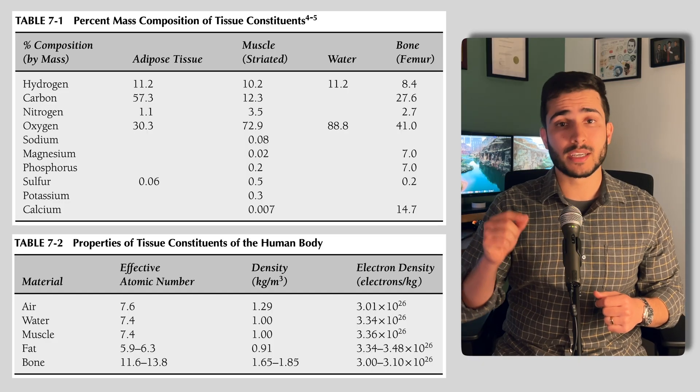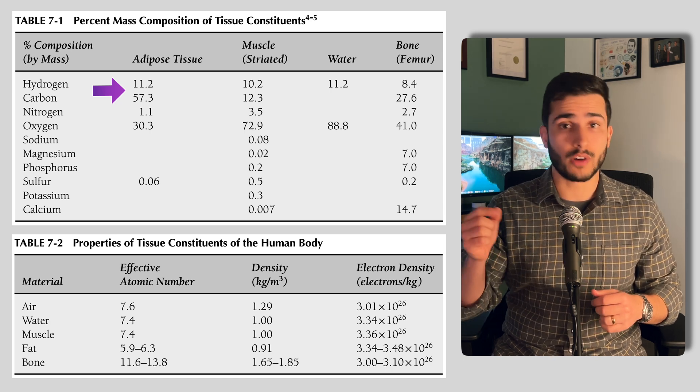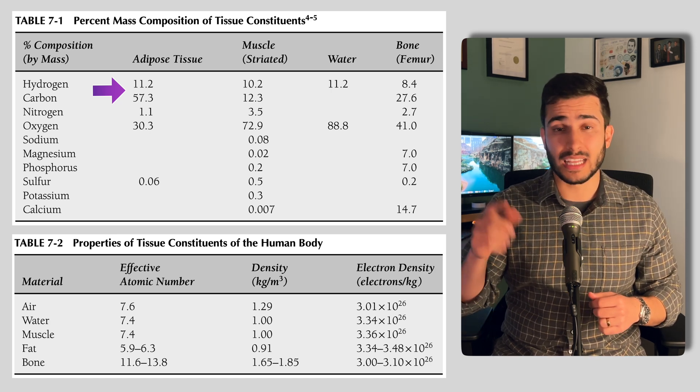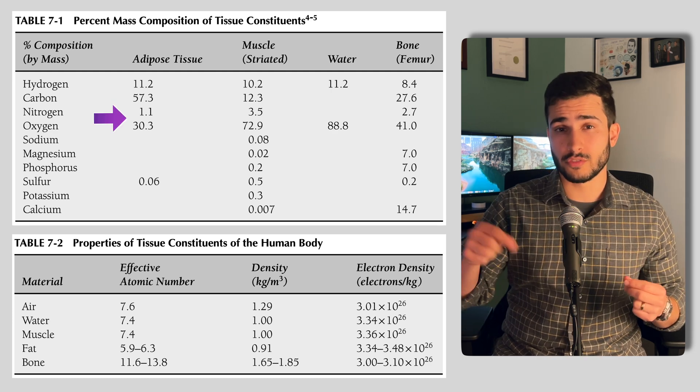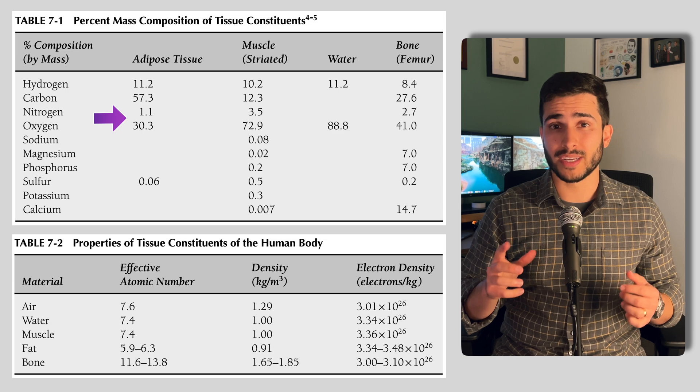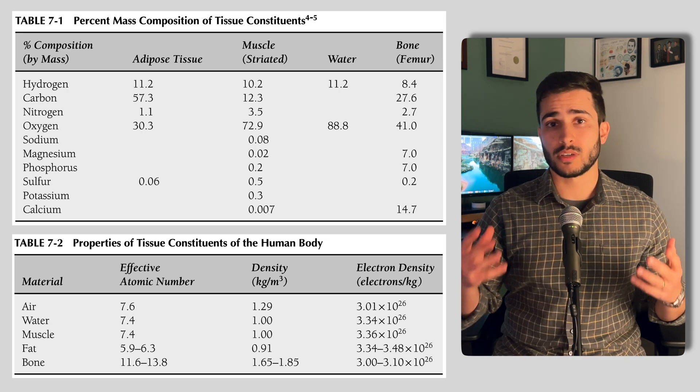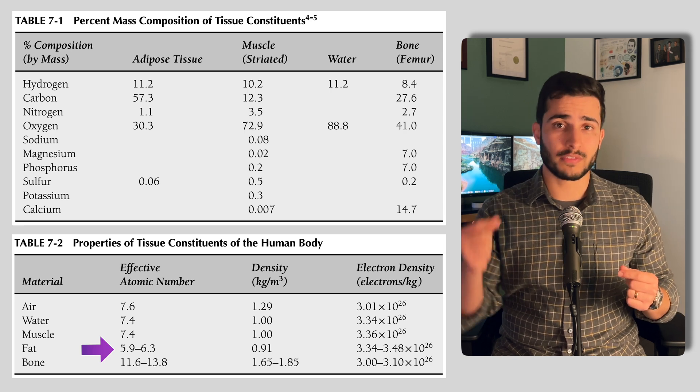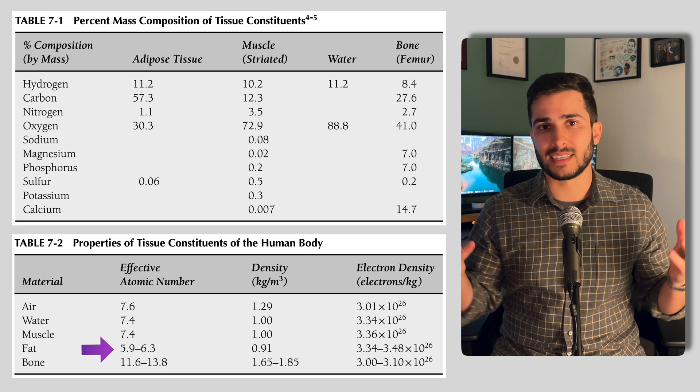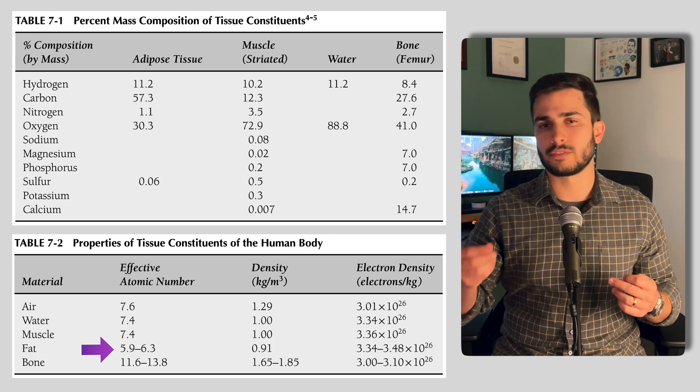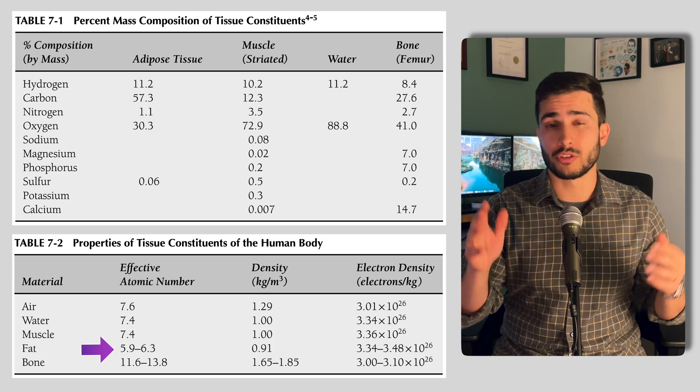Again, going back to this table, we can see that when compared with muscle and bone, fat does have a higher concentration of hydrogens and carbons at 11.2 and 57.3% respectively. A lot lower concentration of nitrogen and oxygen at 1.1 and 30.3% respectively, when compared to other tissue types. And so as a result, the effective atomic number of fat is between 5.9 and 6.3, which is less than that of soft tissue at 7.4, and of course, of that of bone, which is between 11.6 and 13.8.